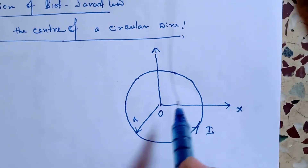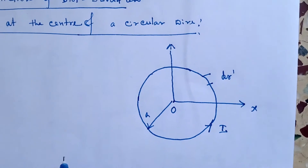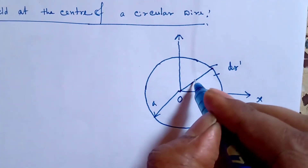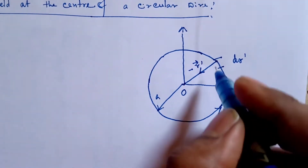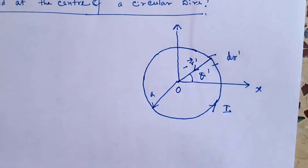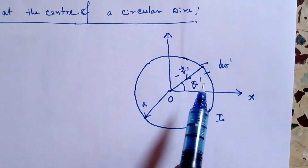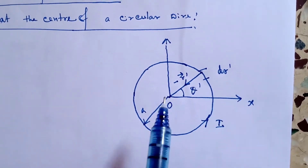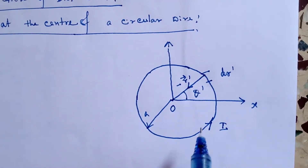For considering a current element, we choose an elementary length dr', or elementary arc. The distance of dr' from the center is the source coordinate towards the center, and the angle between the axis and r' is θ'. We note r', θ', dr' — all prime coordinates are related to the source coordinate, whereas the non-prime coordinates are the field coordinates.